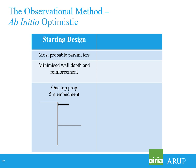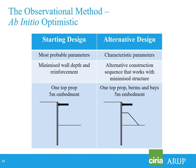In Ab Initio optimistic, our starting design uses most probable parameters — we've minimised wall depth and reinforcement, which can't be changed once installed. The starting design is one top prop and five metres of embedment. Our alternative design, relying on characteristic parameters, is an alternative construction sequence that includes the top prop but also requires sequential excavation using bays and berms. The embedment has to remain five metres since that's what's already installed. So that's the alternative — if things are going badly.